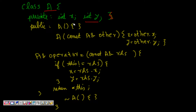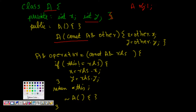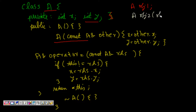The default constructor will not initialize x and y. Then the copy constructor is generated: object1 is passed as the 'other' parameter, x becomes other.x and y becomes other.y, and the object is constructed with this constructor.